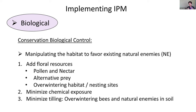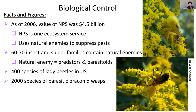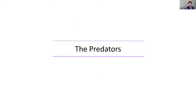As of 2006, the value of natural pest suppression services in the U.S. was $4.5 billion, showing how substantially these small insect predators and parasitoids contribute to agriculture. We have 60 to 70 insect and spider families that are natural enemies providing biological control services. Two examples are lady beetles — we have 400 different species in the U.S. — and over 2,000 species of braconid wasps.